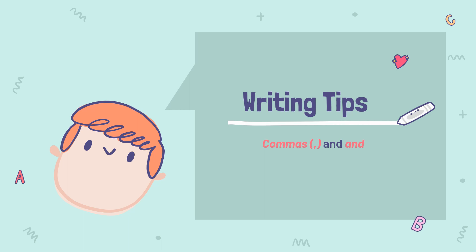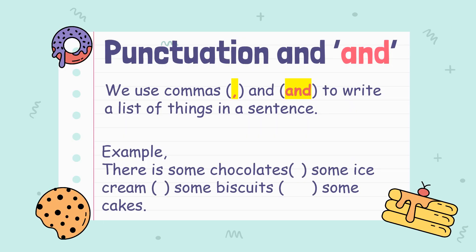Now I want to focus a little bit on writing tips: commas and the word and. We use commas and the word and to write a list of things in a sentence. For example: there is some chocolate, comma, some ice cream, comma, some biscuits, and some cakes. When you use a comma, it means you still have more items to add. You use the word and when it is the final thing you want to add in your sentence.